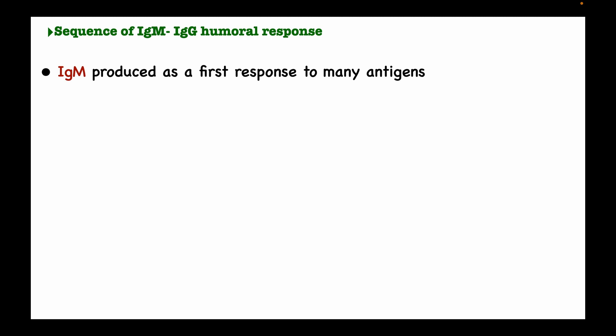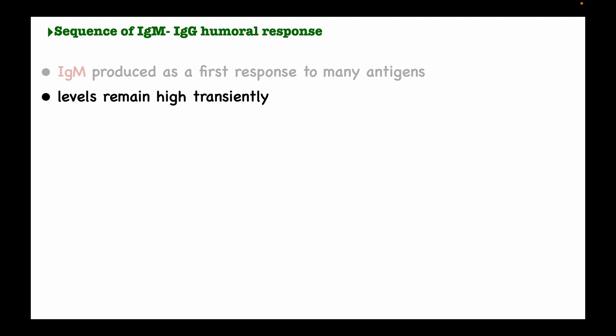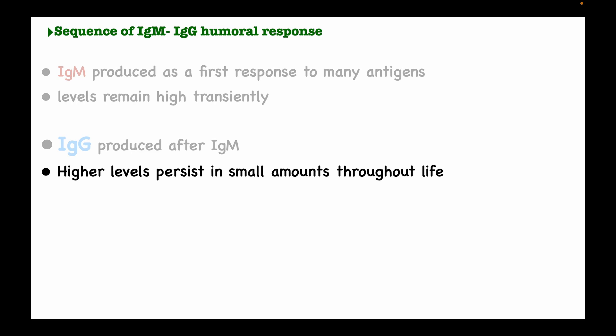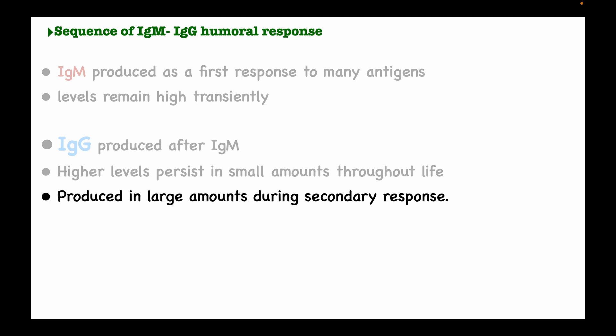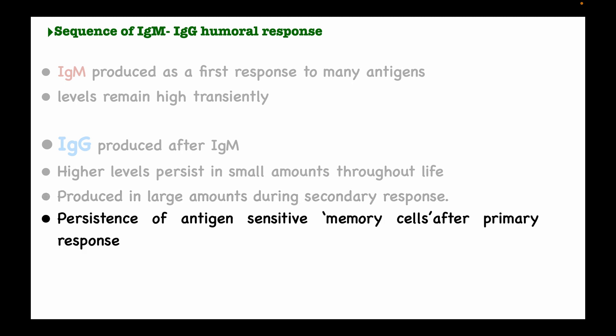Now let's look at the sequence of response between immunoglobulin M and immunoglobulin G. When exposed to an infection, immunoglobulin M is produced as the first response to many antigens and its levels may remain high transiently. After immunoglobulin M has finished its work, immunoglobulin G is produced, with high levels persisting in small amounts throughout life. Immunoglobulin G when present may indicate a chronic infection, recovery from infection, or large amounts produced during a secondary response.